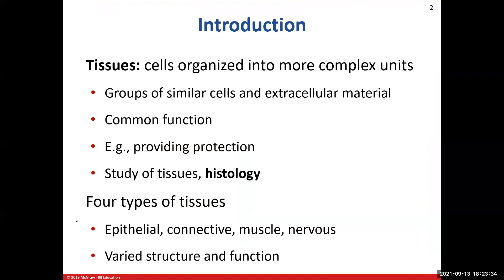We're now increasing our complexity for the organization of the overall biological organism, which is us humans. We went from cells, now we're going up to tissues, then from tissues we'll go into organs, then organ systems. We'll spend the remainder of the course doing organ systems. For example, the skin — that's our next chapter, chapter six — and the skin is an organ, so that's the first of our organ systems we're going to cover.